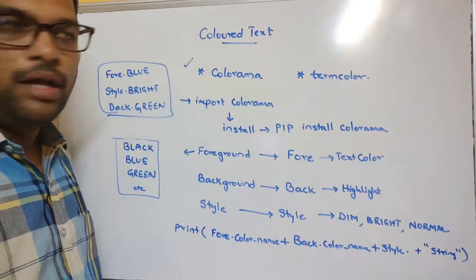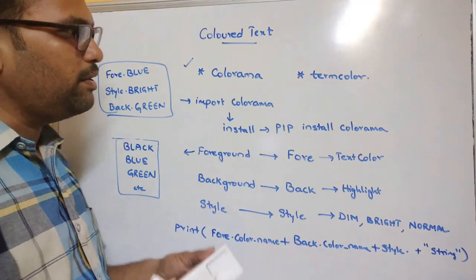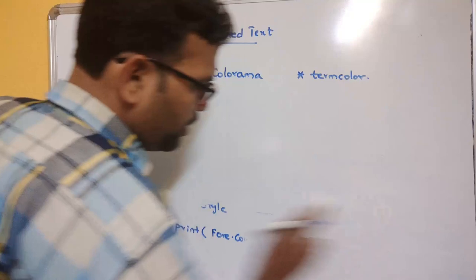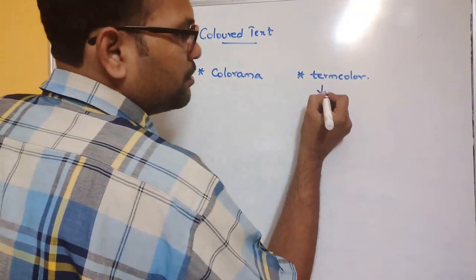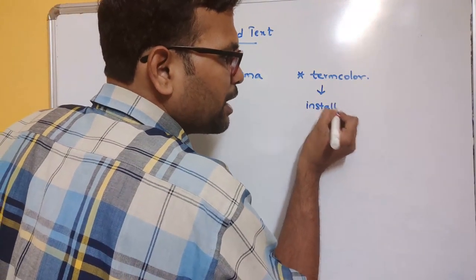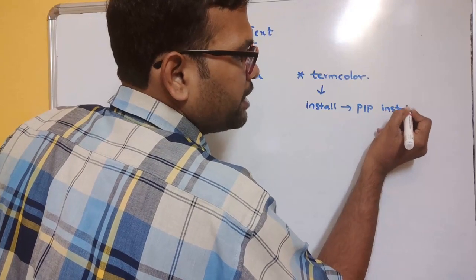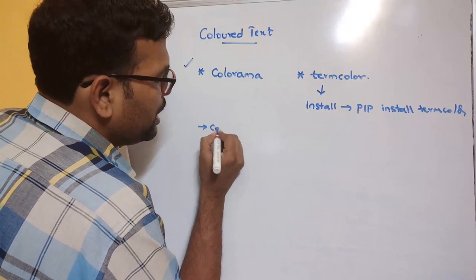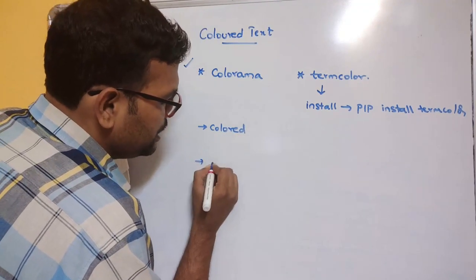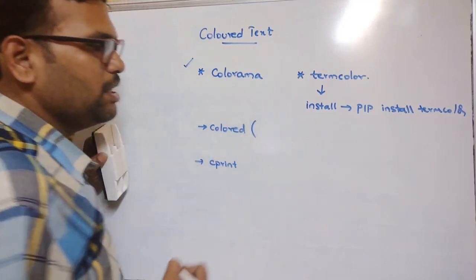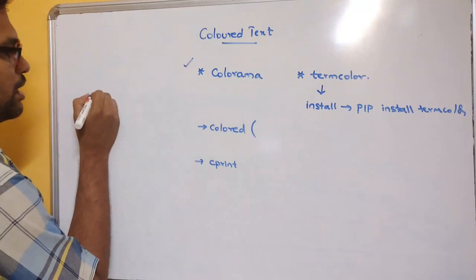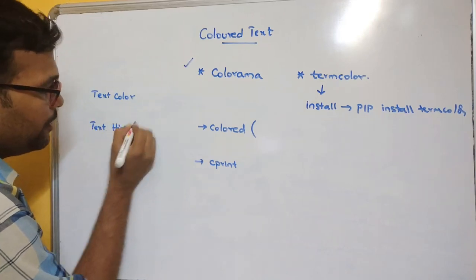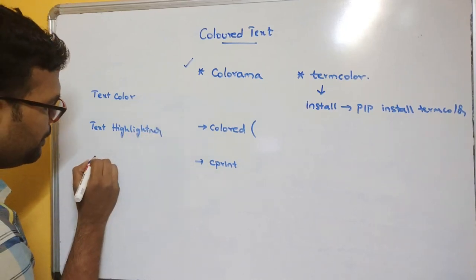Another way to display colored text is using termcolor. First, install it: 'pip install termcolor'. Termcolor has two functions or classes: colored and cprint. In these, you pass three things: text color, text highlight, and attributes.